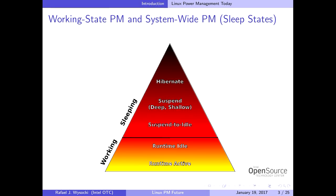The boundaries of that range are quite well defined. One boundary is called runtime active — all the components are on and have not been suspended. The other boundary is called runtime idle, where even though the whole system is in the working meta state, all components are actually inactive and have been suspended. However, if there is an event like an interrupt from a device, then something can happen at any time.